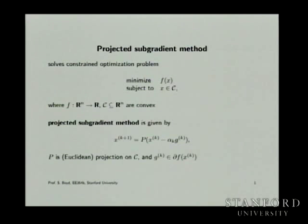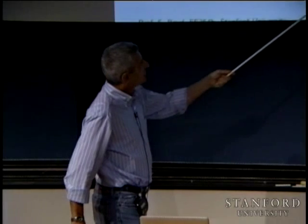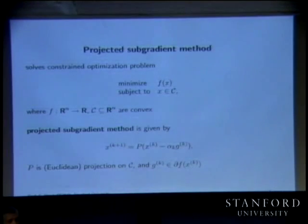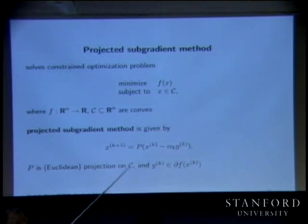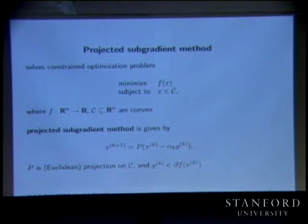You then take a step in the negative subgradient direction with a traditional step size. This in no way takes into account the constraint, and then you project onto the constraint. This is going to be most useful when the projection is easy to implement, and we talked about that last time.